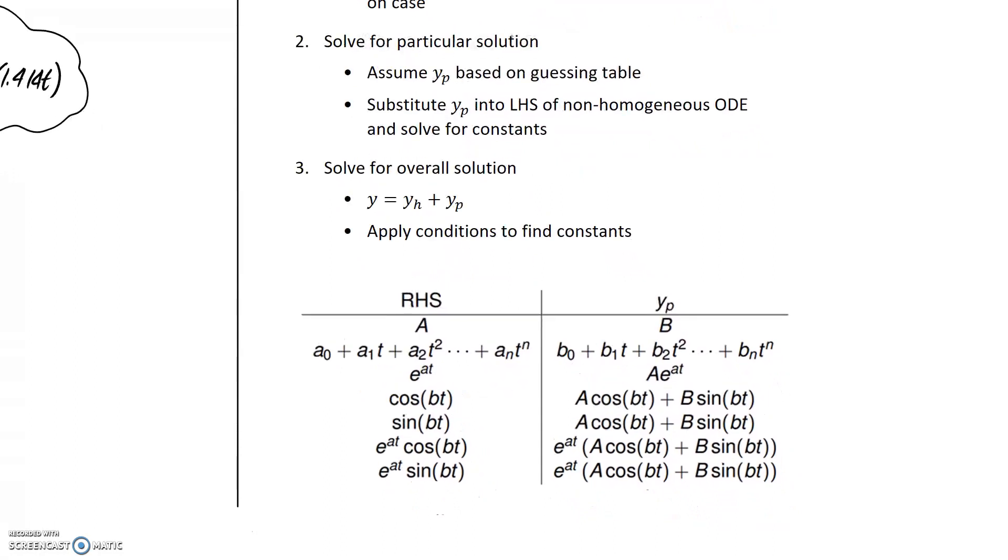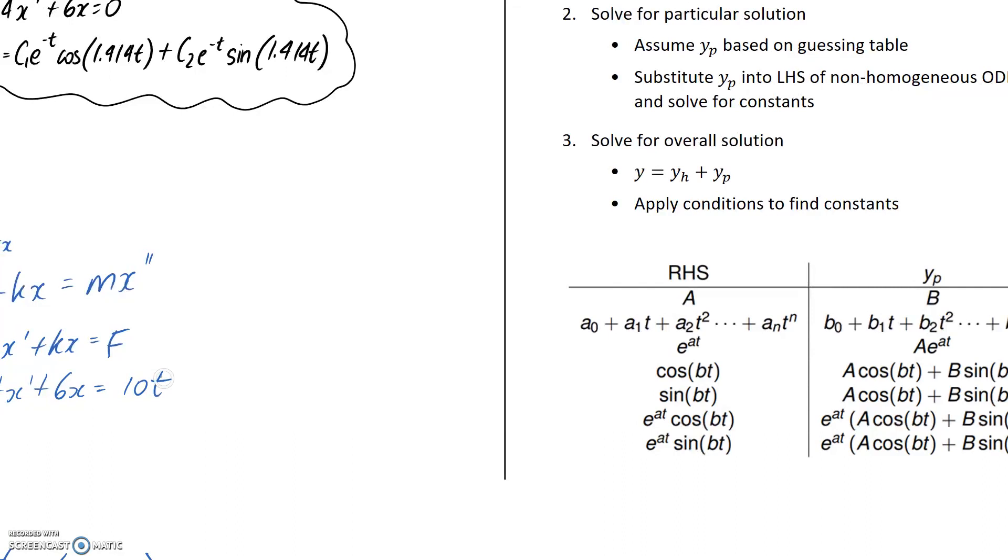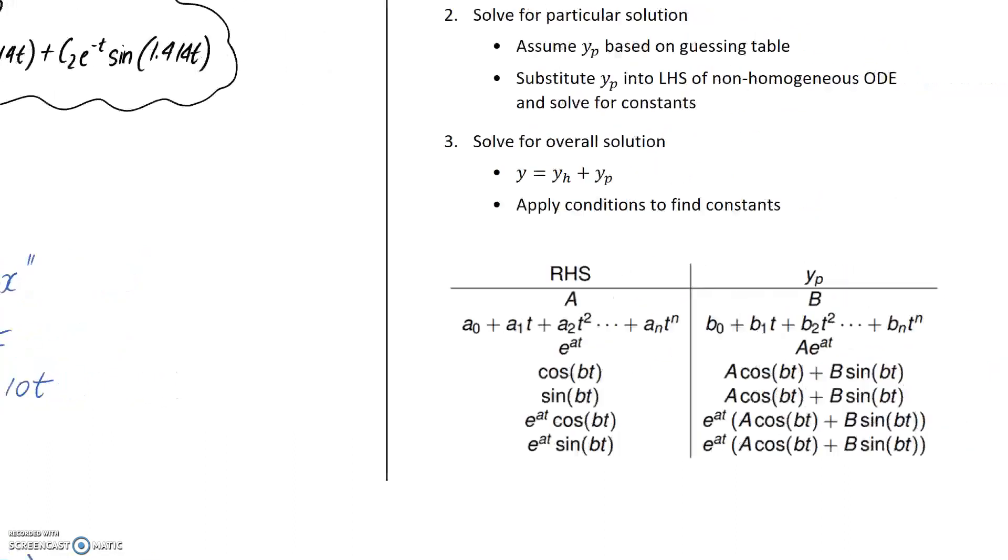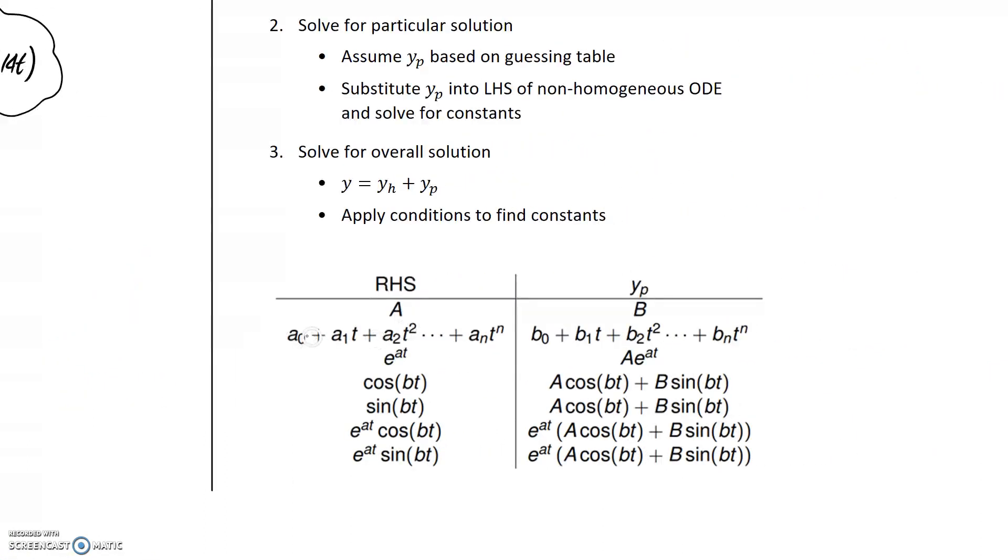Jumping over to our steps here, we're going to assume a particular solution based on the guessing table. So this is the guessing table, and this is the right hand side of our equation. So if we have a look here, we have something that looks like 10t. And if we look down the table, the closest we can get to it is going to be this line here. We can see if we have a constant plus some number times t, this is kind of what we have, then we can copy this out.